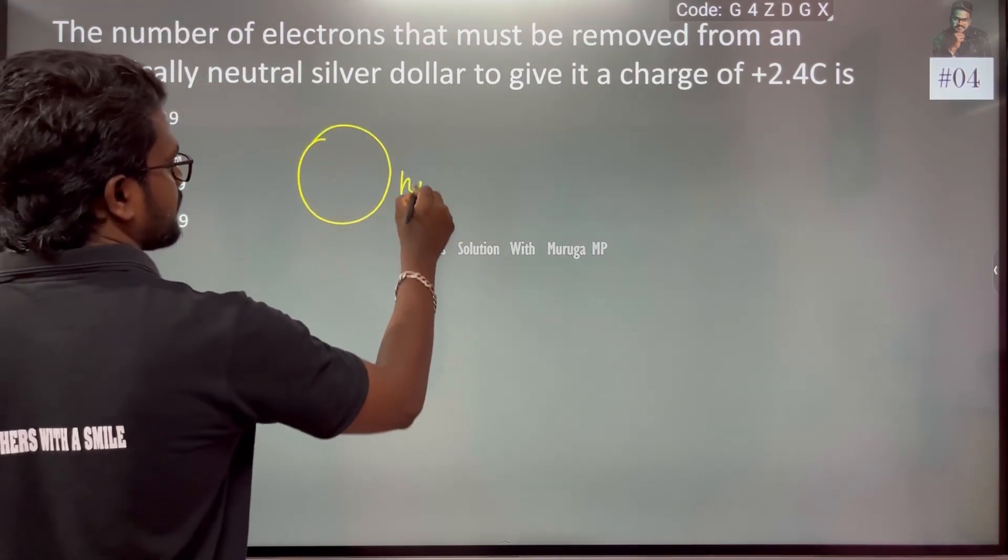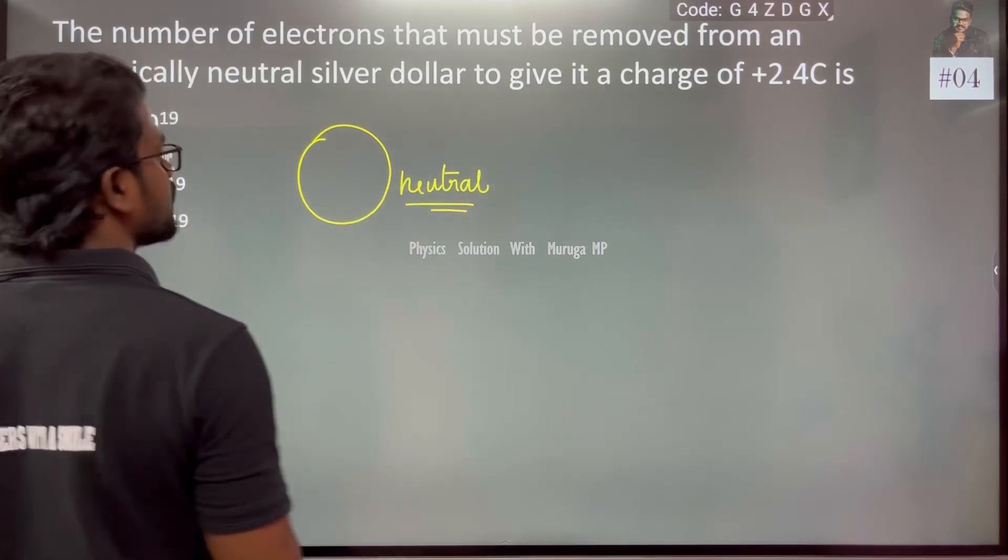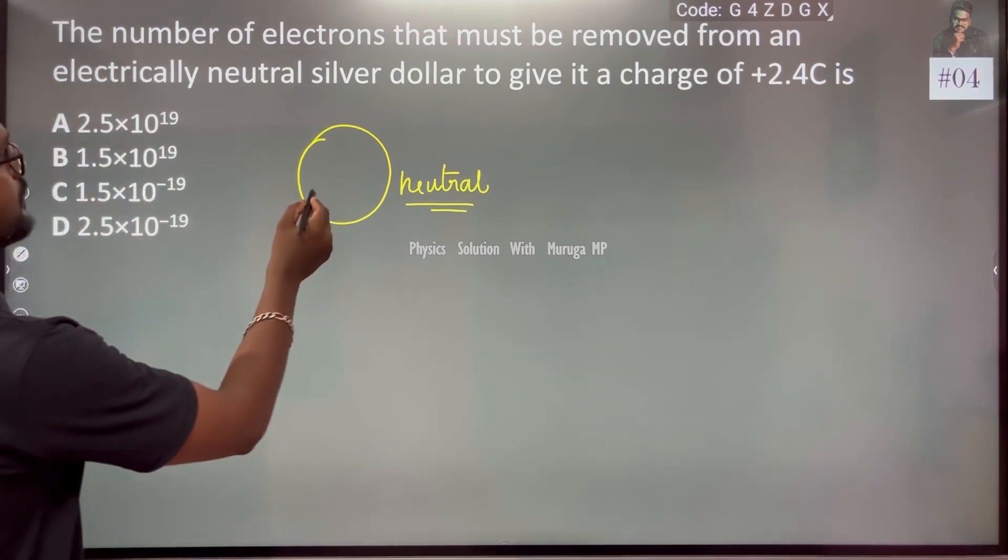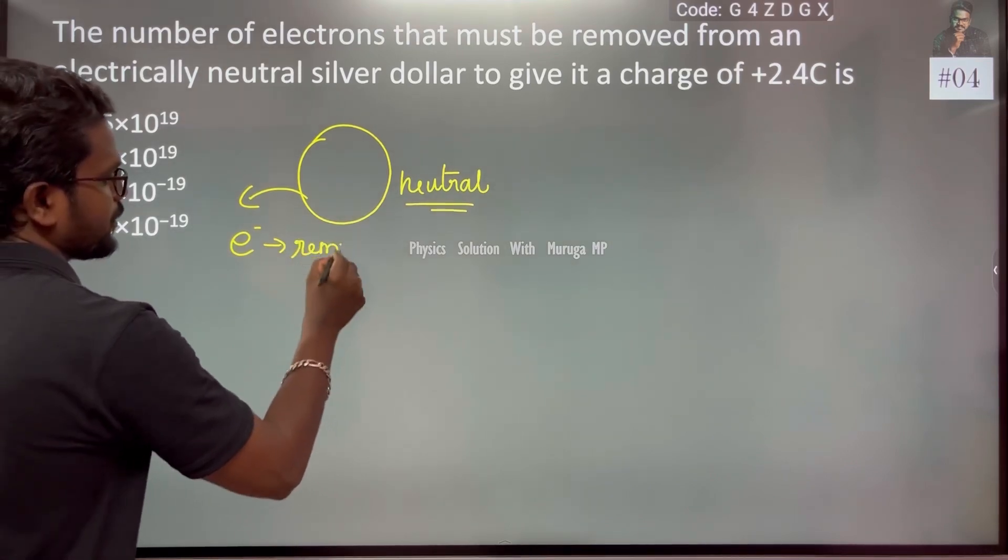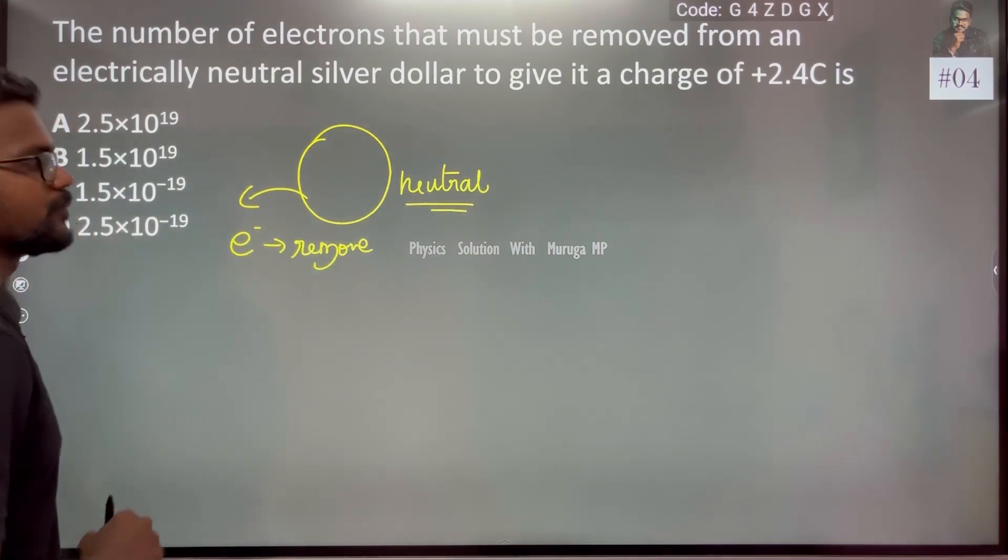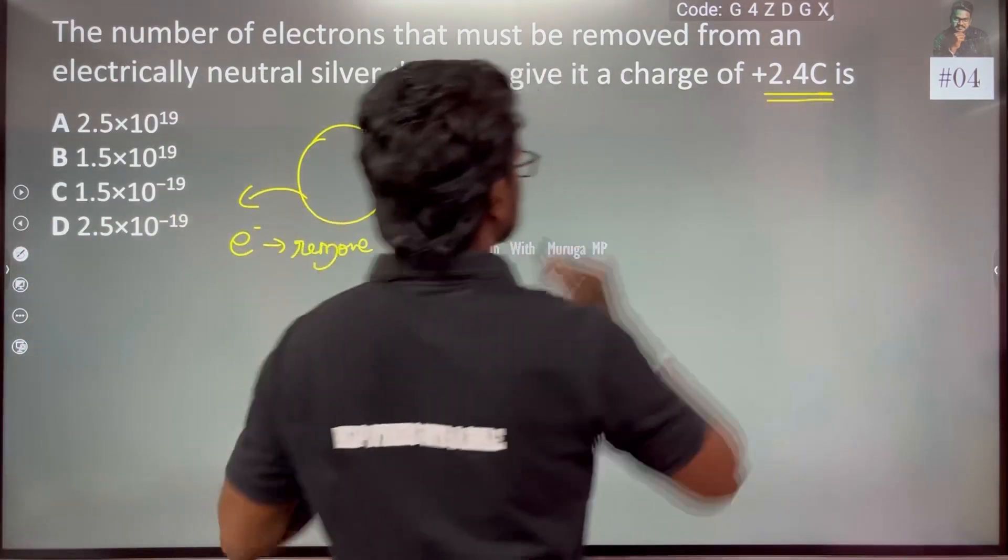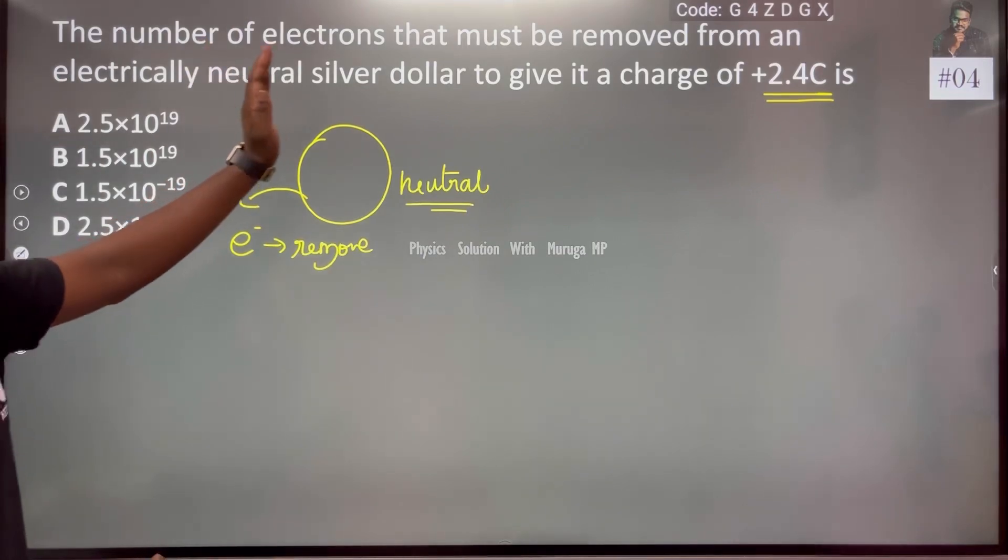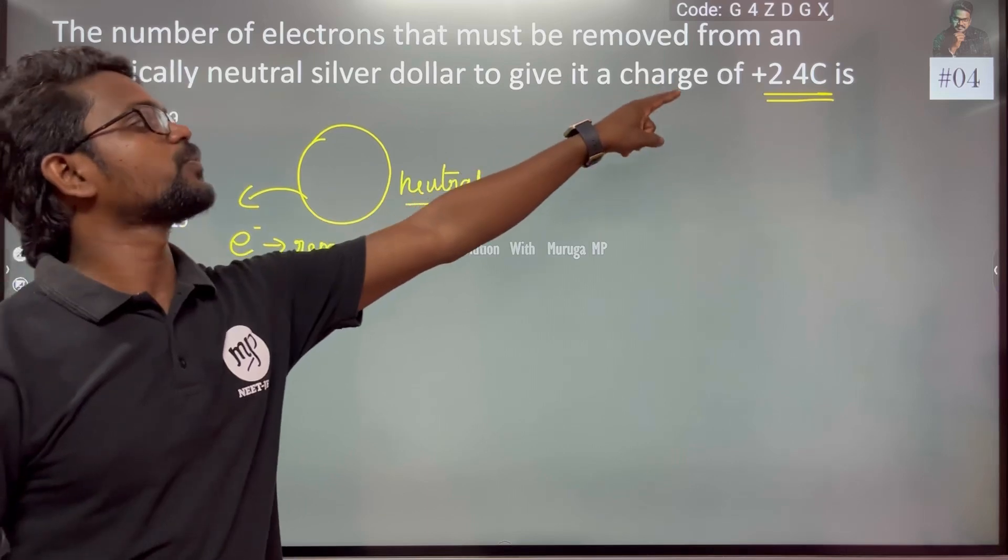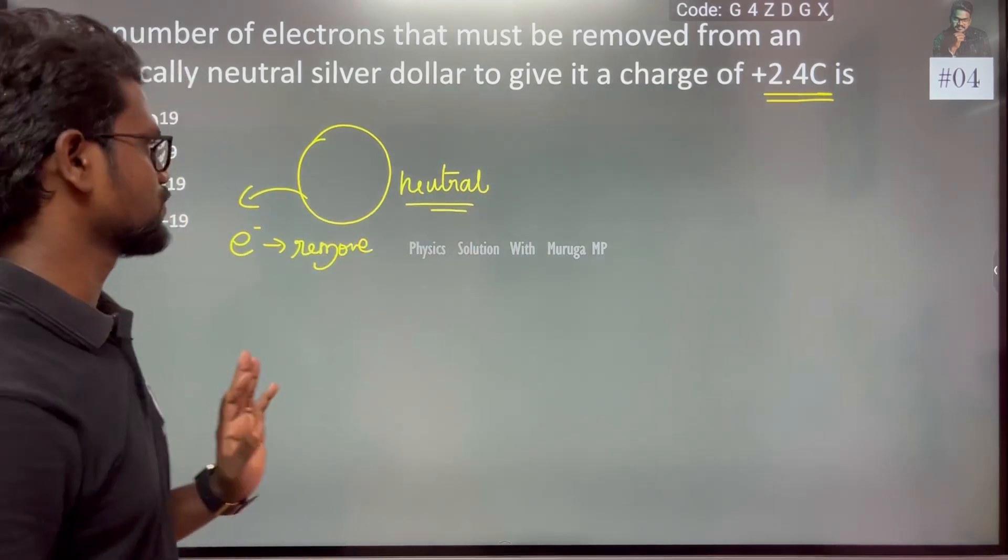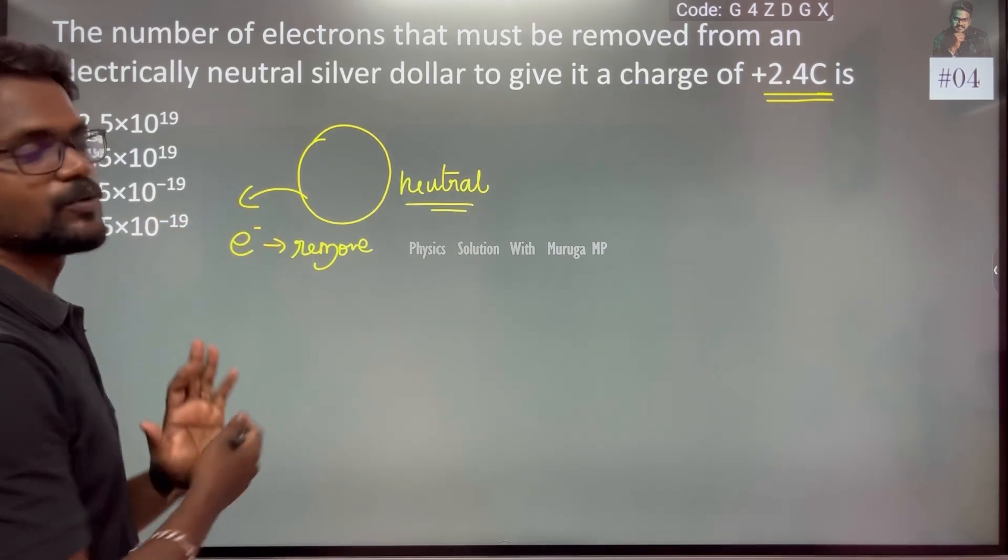The number of positive charges and the number of negative charges are equal in this object. I am removing some electrons. How to remove electrons? If the electron is removed from the object, this object is charged. Neutral silver dollar to give it a charge of plus 2.4 coulomb. If the electron is removed from the object, we need to find the number of electrons removed.